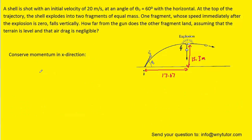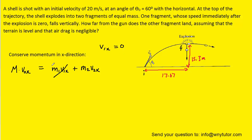Specifically, we're going to be conserving momentum in the x direction. We can do that because there are no horizontal forces acting on the projectile, so momentum will be conserved. We'll define the initial point at launch and the final point at the height of the trajectory. In the x direction we write: the initial mass M times the initial velocity in x equals the momentum in x after the explosion. Since one piece drops straight down, its velocity in the x direction will be 0 meters per second, eliminating that term.